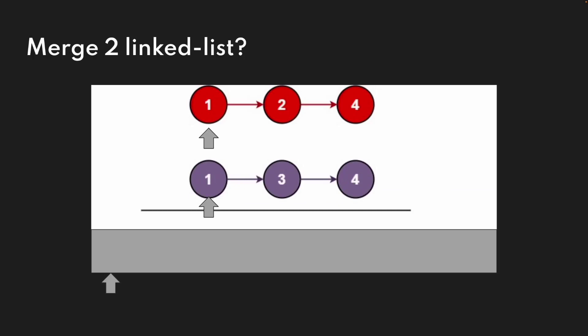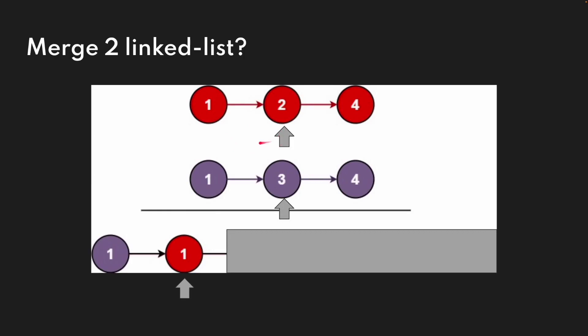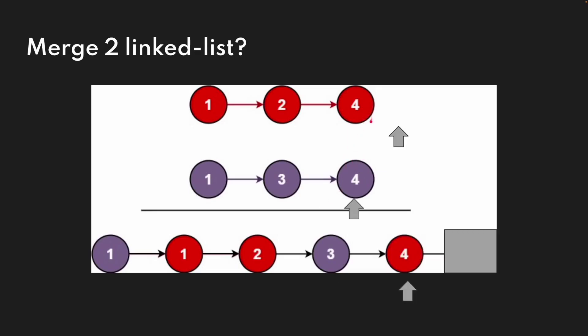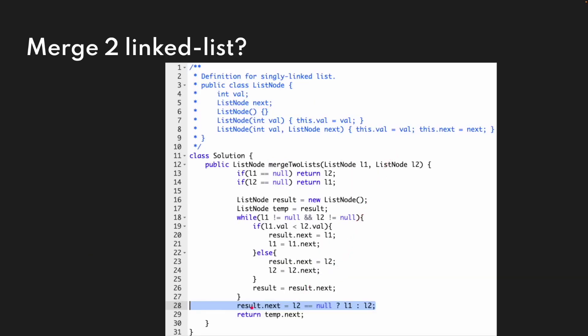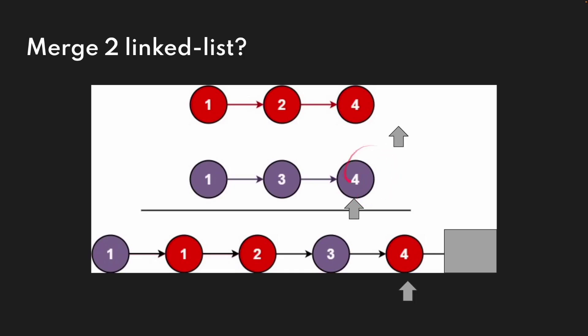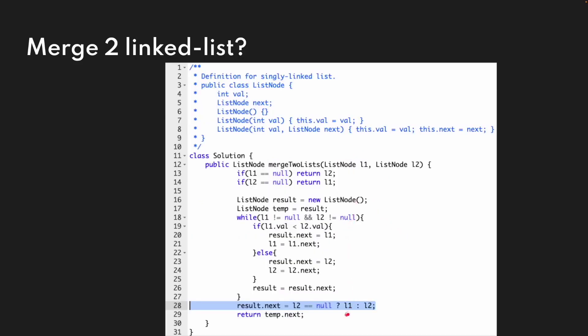If I want to merge two link lists, I have two pointers that point to the head node of each link list. We compare the values — since they're equal, we take the bottom one. Since one is smaller, we take one and move the pointer to the next node. Two is smaller, so we take two. Three is smaller, so we take three. When four is equal in both, we take any — let's take the top one. When one pointer goes out of bounds, we set result.next equal to the remaining sublist. That's how we merge two link lists.